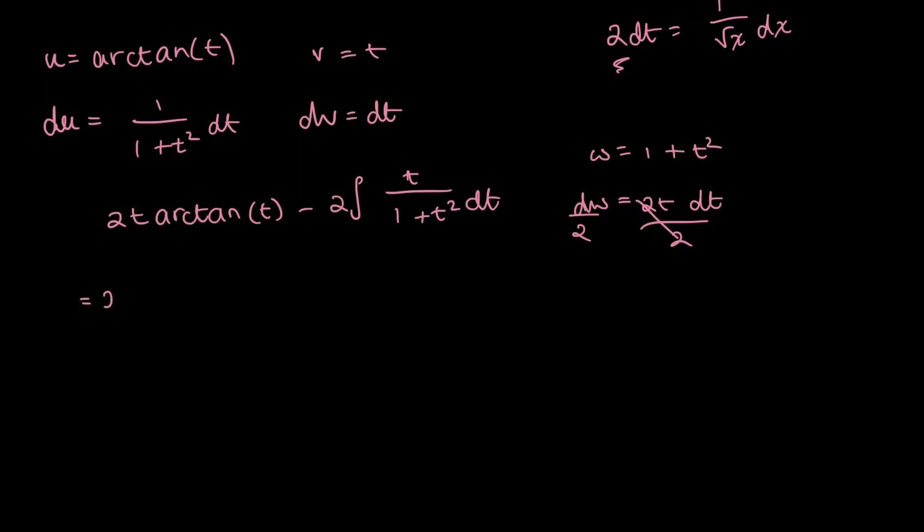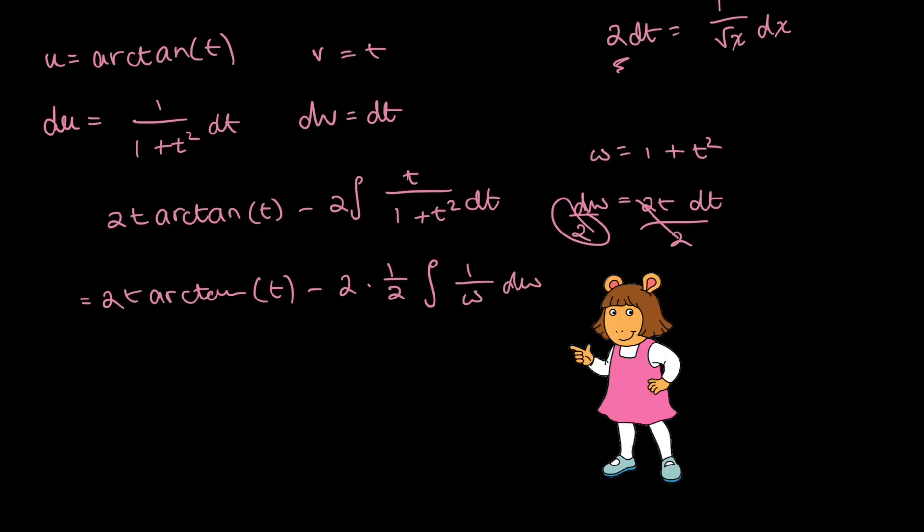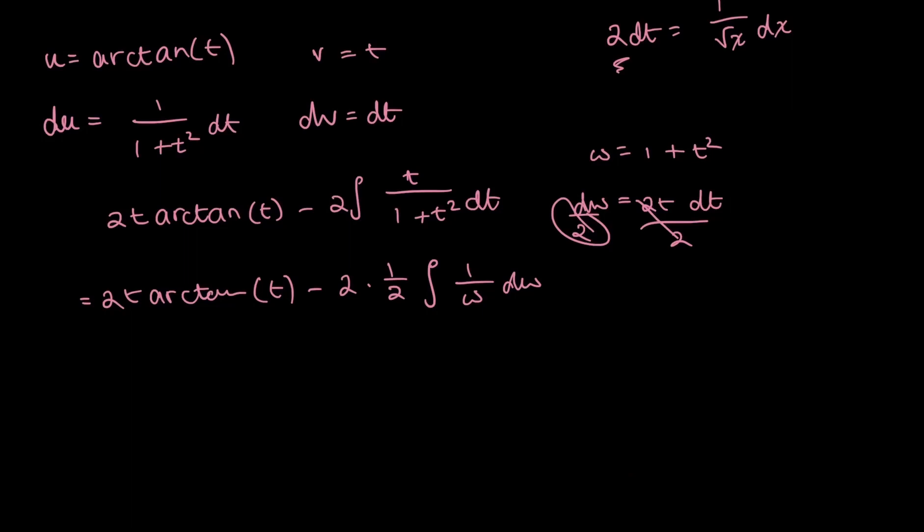So let's write that in here, 2t arctan of t minus. That 2 is out there, and because I have a factor of 1 half, it's just a constant, I will pull that out too. And now, with rewriting this in terms of the variable w, I have 1 over w dw. And so, notice how nicely these 2 and 1 half cancel each other out.